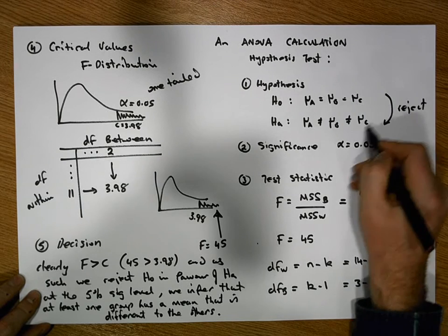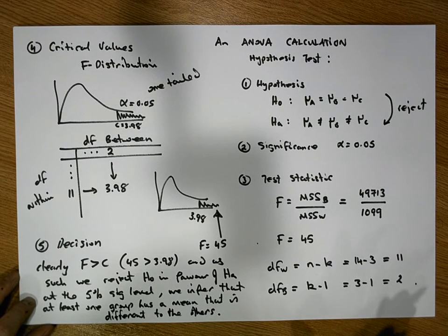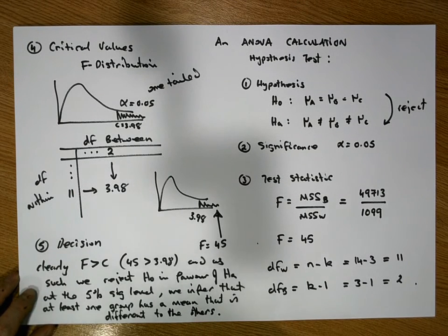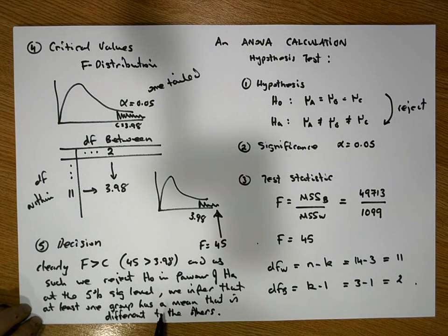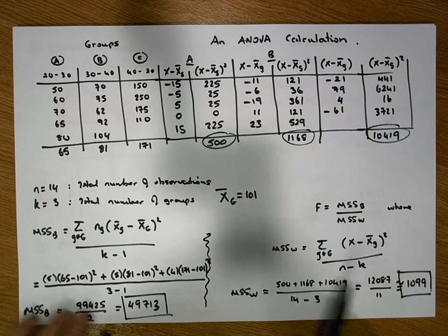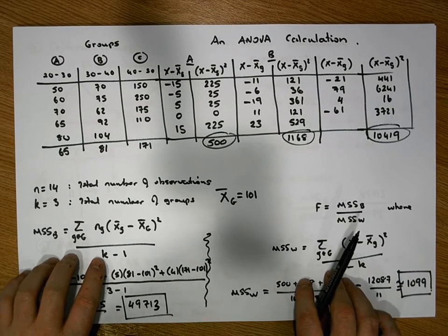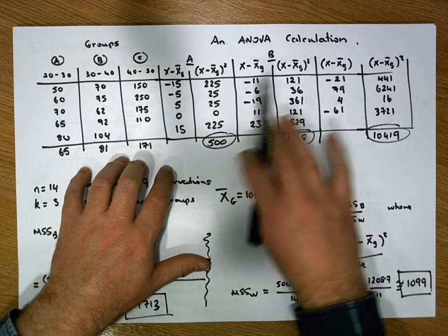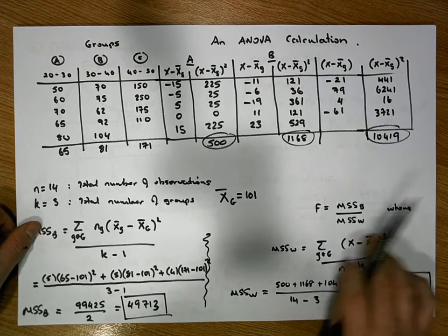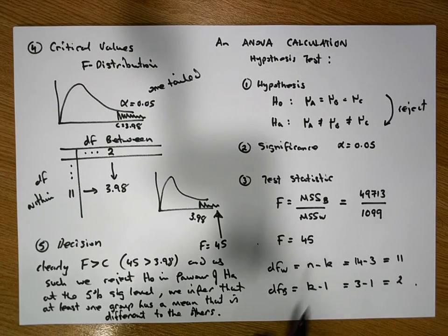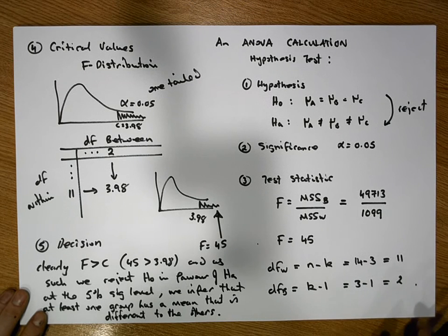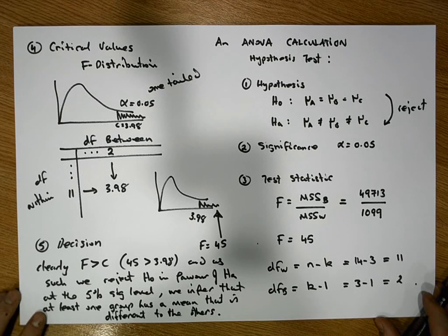We don't know which specific group is different, so what we would do next is follow this test up with some sort of post hoc test to identify which pairings of groups have contributed to this significance. There were a lot of calculations involved, but once you understand the formulas it's simply constructing a table to calculate the sums of squares, then constructing the F statistic and proceeding with the hypothesis test. This was Jonathan Lambert with the Mathematics Development and Support Service at the National College of Ireland.